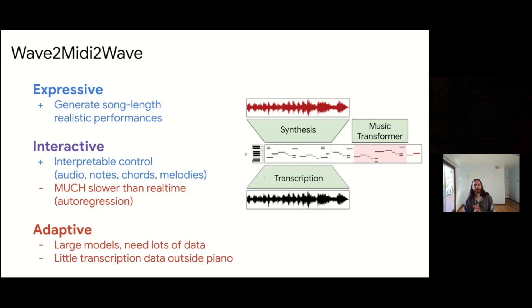When we think about the expressive-interactive-adaptive axes, this system is great in terms of expressivity — we're learning to generate song-length, realistic performances. For interactivity, we have some interpretable intermediates in terms of audio, notes, chords, and melody conditioning. But on the downside, it's much slower than real-time because we have several layers of autoregressive models working on top of each other. And for adaptivity, it needs a lot of data to train each component element, and there's little of this data that exists outside of transcription.